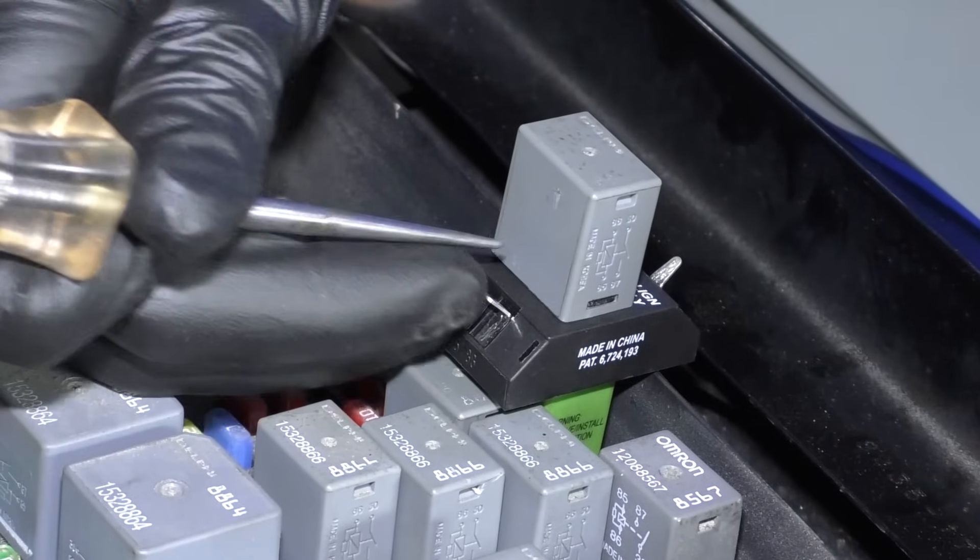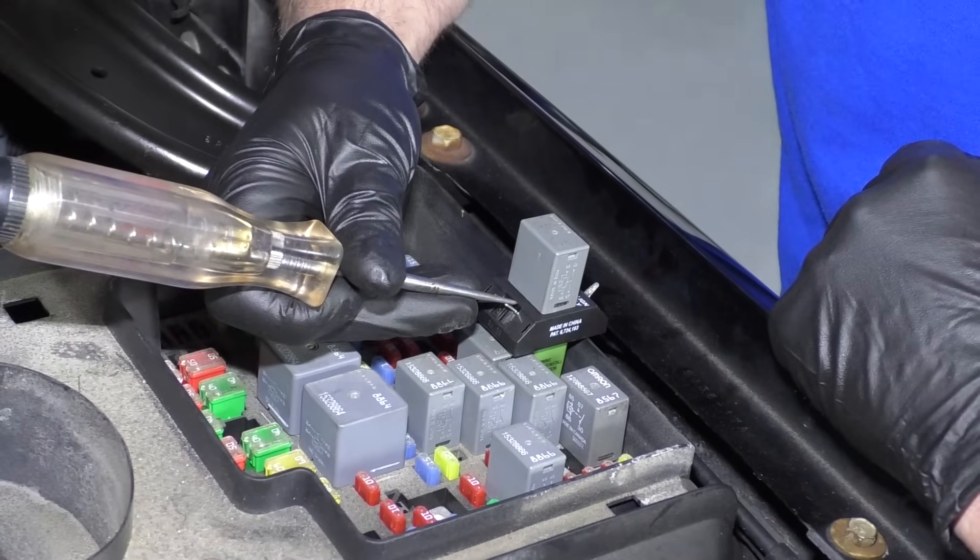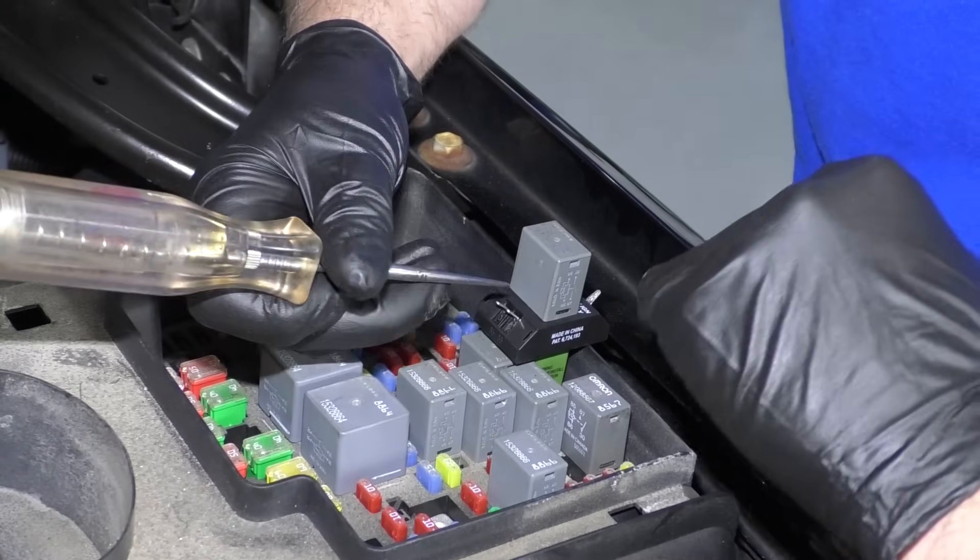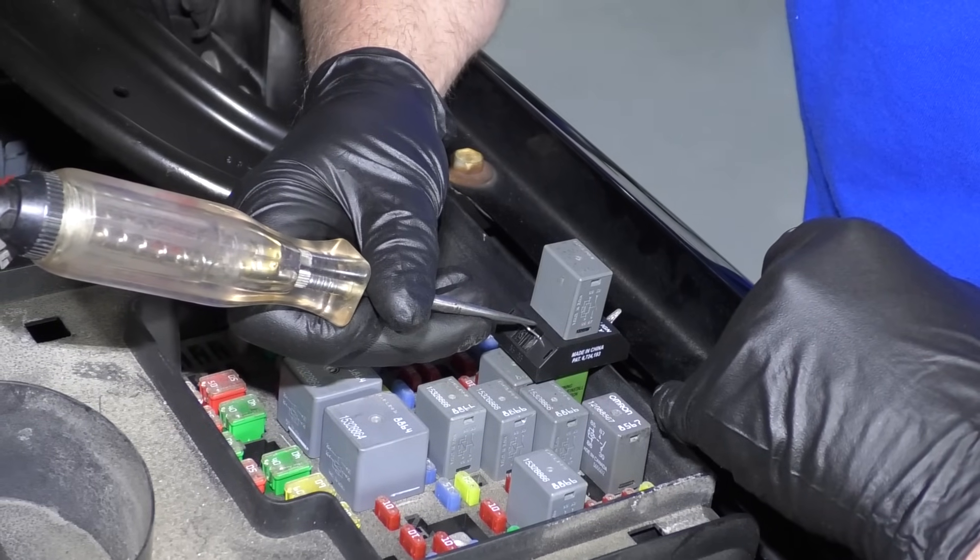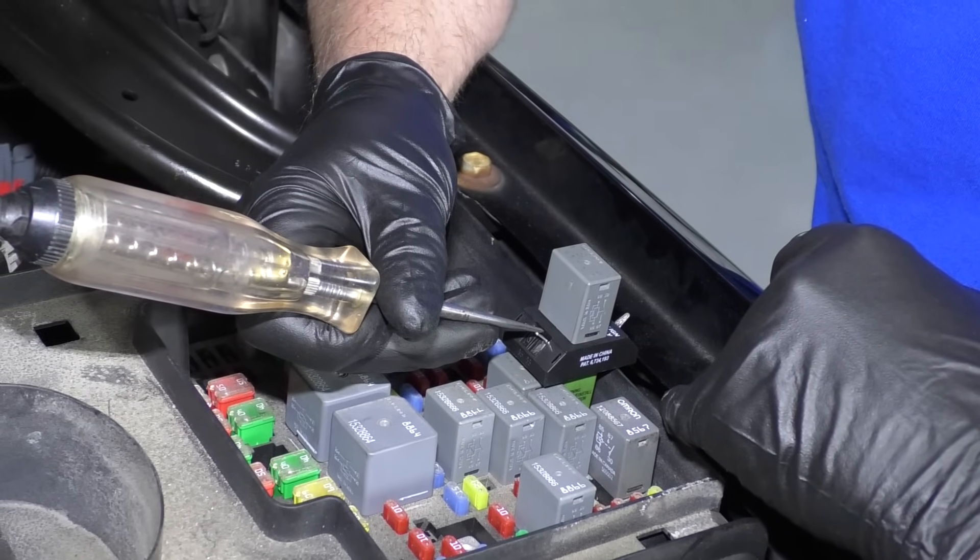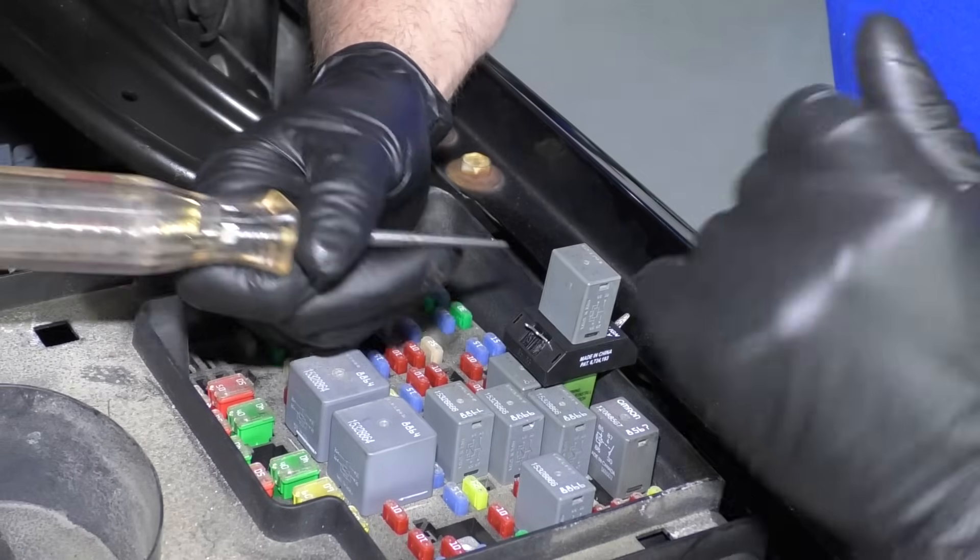If we were to ground 85, then we should hear the relay click, and you can just ground it with the test light because it's a low voltage circuit, and see the relay clicks, but the horn's not going off.